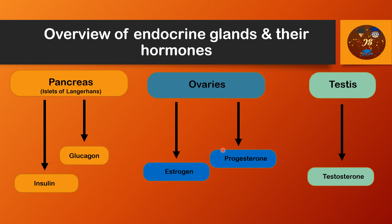Regarding the ovaries, two hormones are produced: estrogen and progesterone. Estrogen stimulates the development of female sex organs, the breasts, and the various secondary sexual characteristics of the female. Progesterone stimulates secretion of uterine milk by the uterine endometrial glands and also helps promote development of the secretory apparatus of the breast.